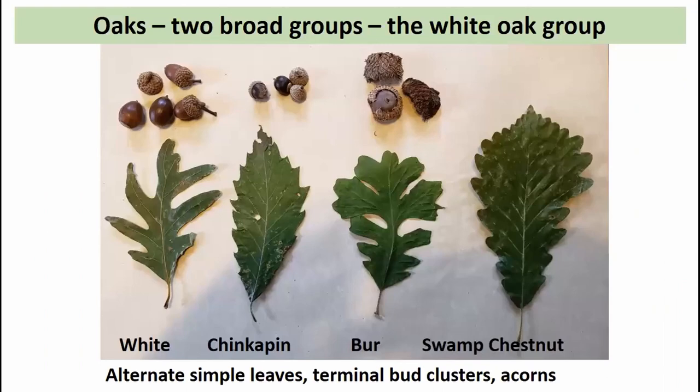One of the biggest groups you'll encounter regularly in Indiana is the oaks — about 17 species north to south across the state, and they can be a confusing group. Some characteristics are quite similar between species and they often grow in close proximity on the same type of sites. This is where guidebooks can be really useful.